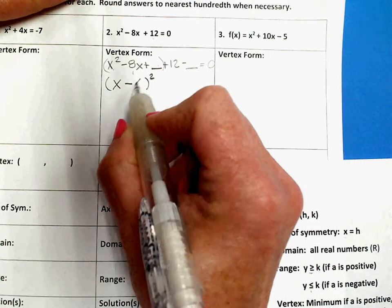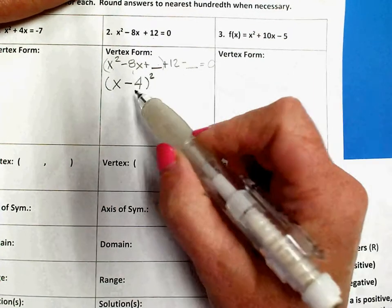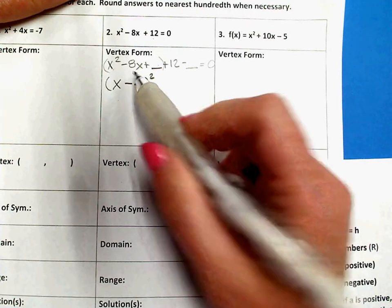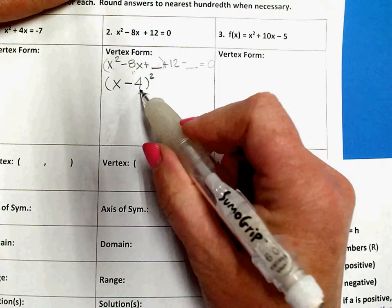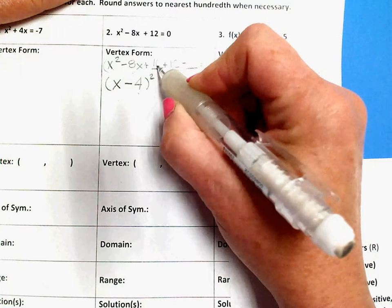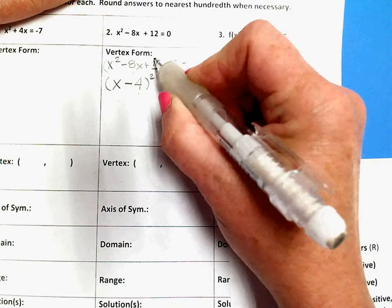Half of negative 8 is negative 4, because the negative 4x and the negative 4x is what's going to create the negative 8x. This 4 on the end, when I square it, is 16. So, that's what goes here.